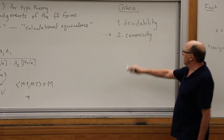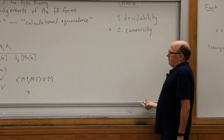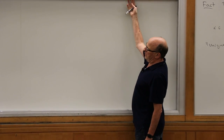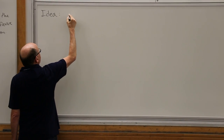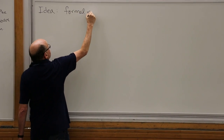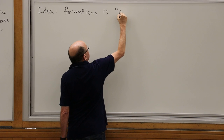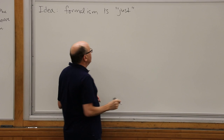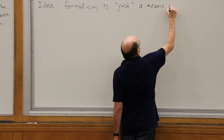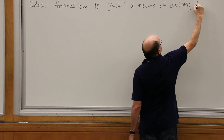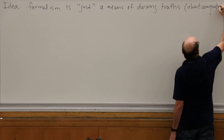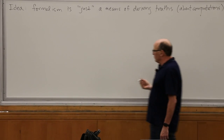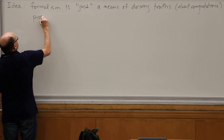You have this formalism and you might want various criteria. From the point of view I'm taking in these lectures, the formalism is just a means of deriving truth — truth about programs, about computations. A related idea is props as types: the combination is that proofs, or derivations — formal proofs, proof terms — are programs. This also comes under the rubric of extraction or code extraction.